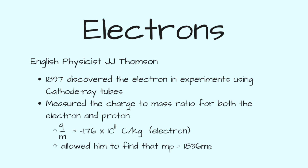A cathode ray tube is a vacuum tube that contains an electron source and a screen. Thomson was able to measure the charge-to-mass ratio for both the electron and then later the proton. He found that for an electron, the charge-to-mass is minus 1.76 times 10 to the 11 coulombs per kilogram. He was also able to find that the mass of a proton is 1836 times the mass of an electron.